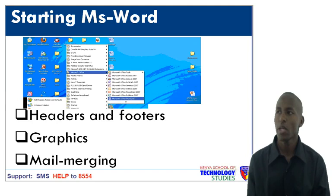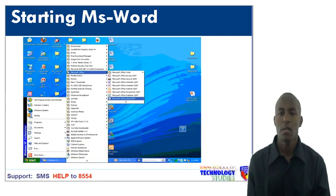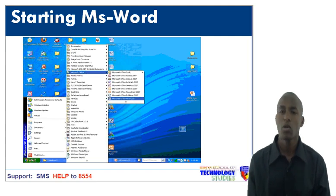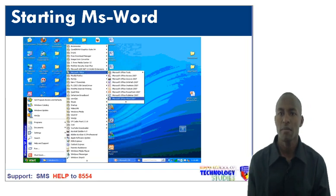Starting MS Word program. You need only to click Start on the taskbar, go to Programs, then Microsoft Office, and lastly click Microsoft Office Word 2007.